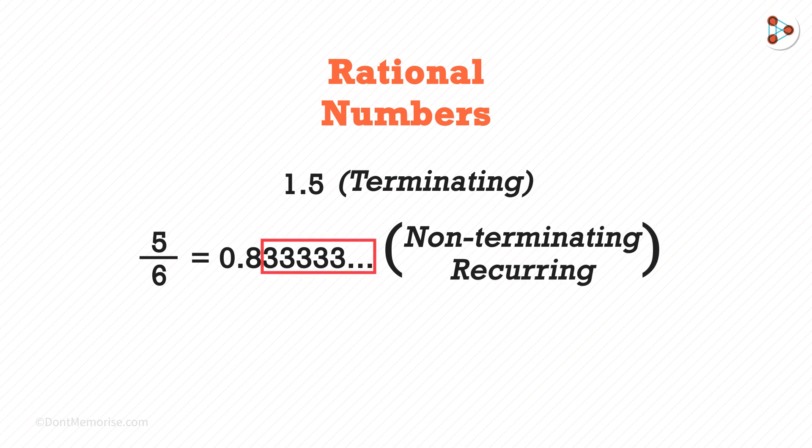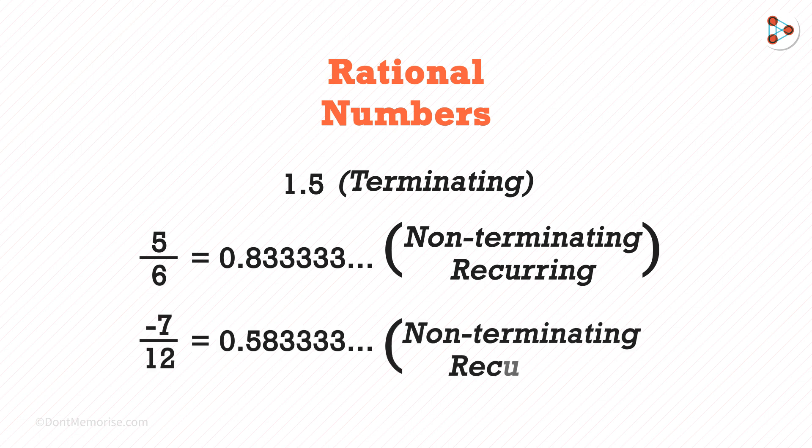This means the number repeats after the decimal point. If we solve for negative 7 over 12, we see that this is also non-terminating recurring.